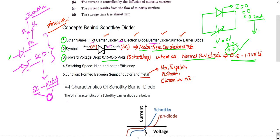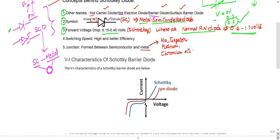Because the Schottky diode has a very low forward voltage drop, it enables current flow very quickly, giving it higher switching speed and greater efficiency. This is why the Schottky diode is widely used in high-speed switching applications. The switching speed is high and efficiency is also high because of this lower forward voltage drop.